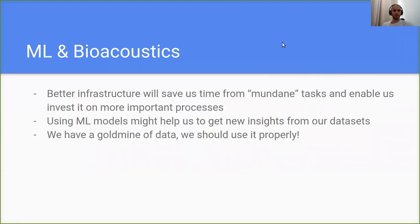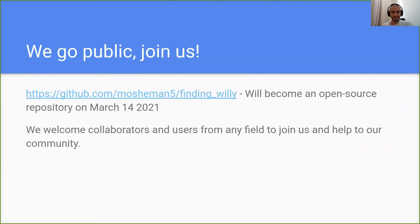To recap: better infrastructure will save us time from mundane tasks and enable us to invest in more important processes such as data analysis. Using an ML model will also help us get deeper insights from our datasets — not only for data processing, but also at the analysis stage. It's important to remember that we have a gold mine of data and we should use it properly. On March 14, 2021, we'll become open source to celebrate Pi Day properly.